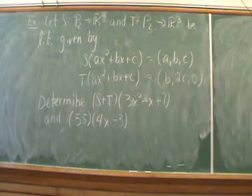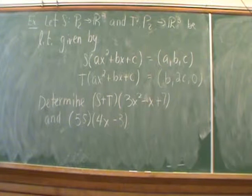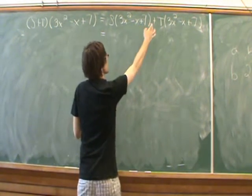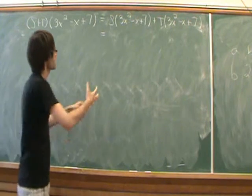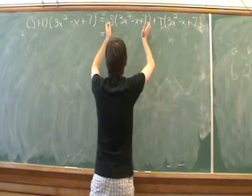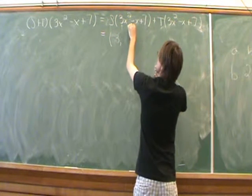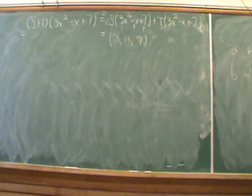The next example deals with different types of spaces. We're going to look at linear transformations from the polynomial space P2 into R3. We take two linear transformations given by the following maps and determine S plus T and 5S of a specific polynomial. To start, we rewrite the expression as S of our given polynomial plus T of our given polynomial. Evaluating S at this polynomial creates a vector in R3 where the coefficients A, B, and C map directly, giving us the vector (3, -1, 7).